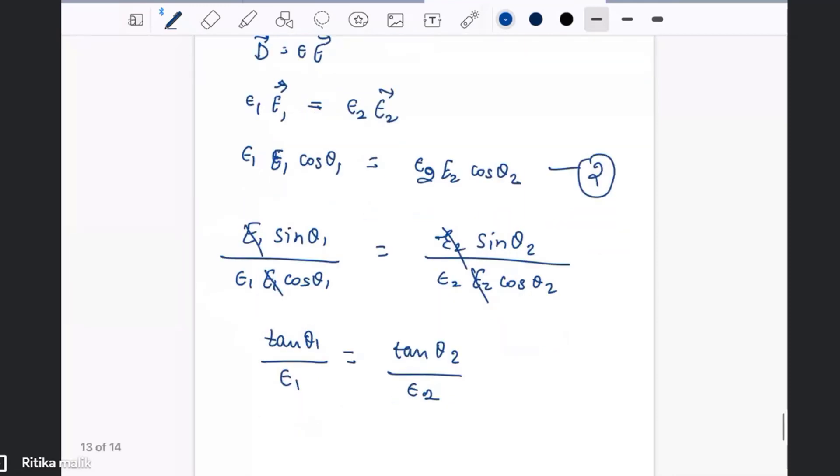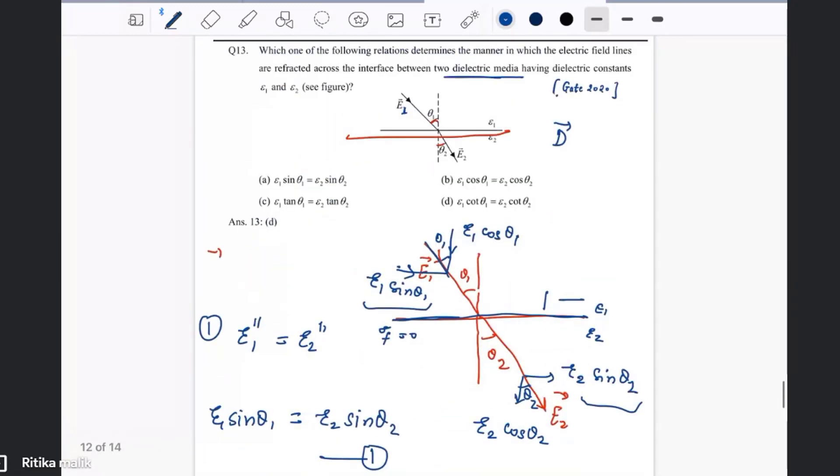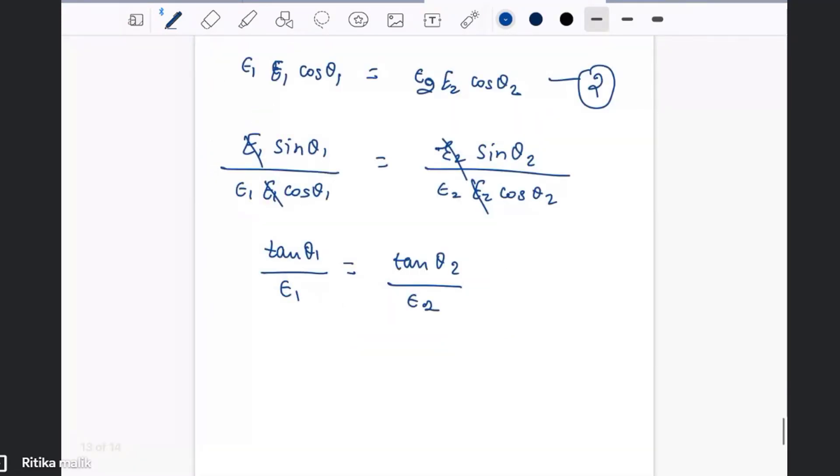Or epsilon 2 tan theta 1 equals epsilon 1 tan theta 2. We have epsilon 2 tan theta 1 equals epsilon 1 tan theta 2, so we can also change it like epsilon 2 tan theta 1 goes on this side and this one goes on this side.